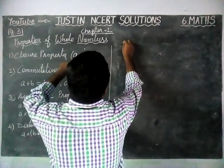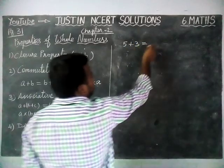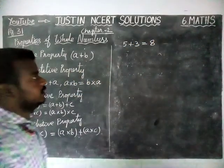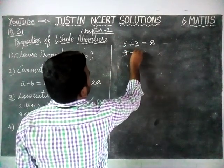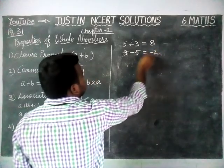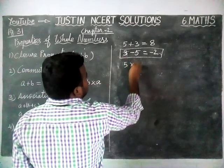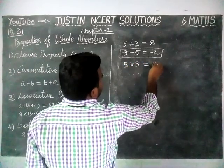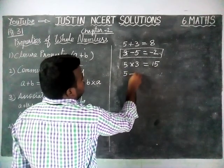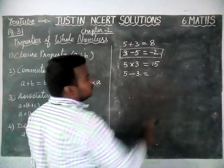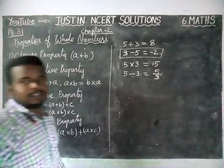We will take A as 5 and B as 3. 5 plus 3 is equal to 8, which is a whole number. But 3 minus 5 is equal to minus 2, so this is not a whole number. Next, 5 into 3 is equal to 15, which is a whole number. And if you divide 5 by 3, this is not a whole number.